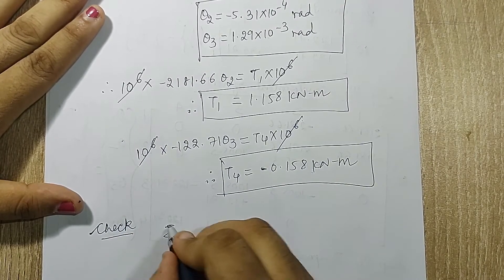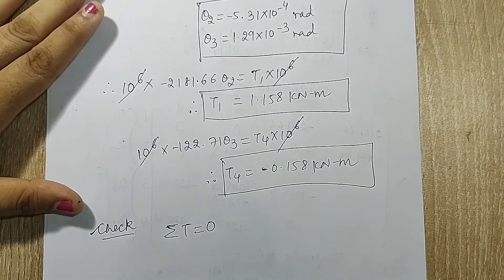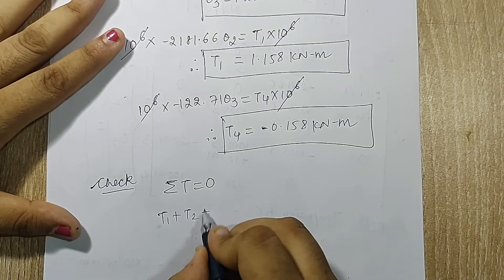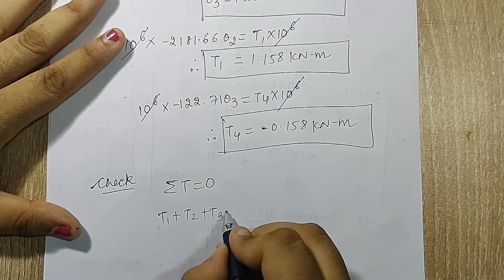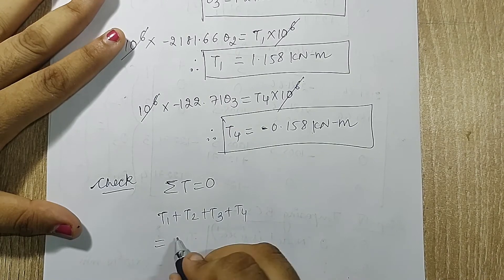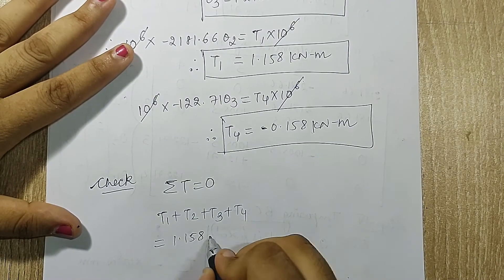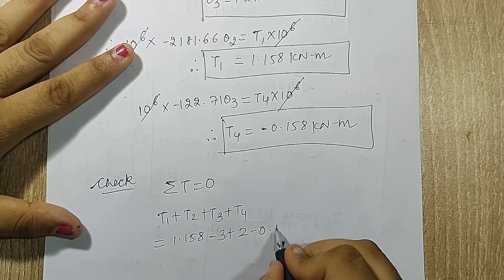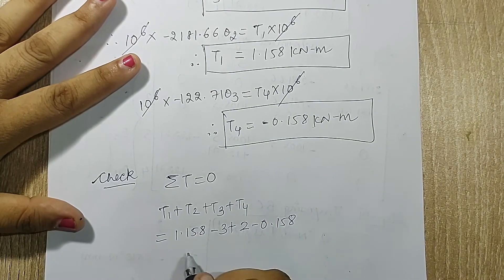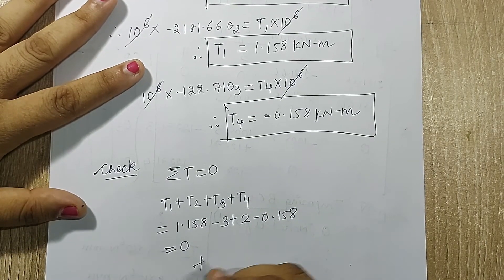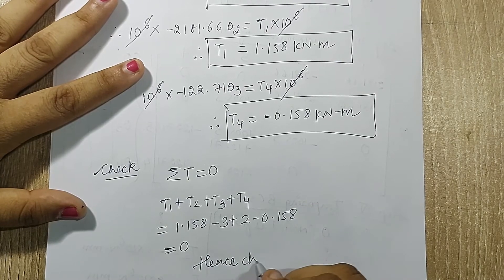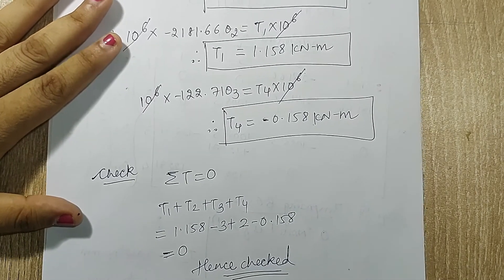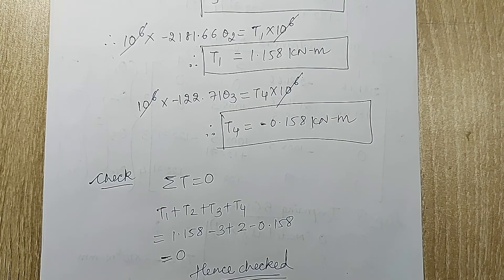For the check step, the summation of torques should equal zero. So t1 plus t2 plus t3 plus t4 equals 1.158 minus 3 plus 2 minus 0.158. When solved, this equals 0. Hence, checked. This numerical ends here as there are no stress calculations.